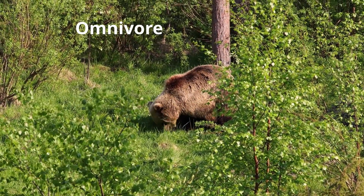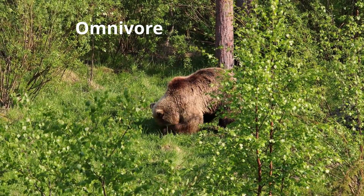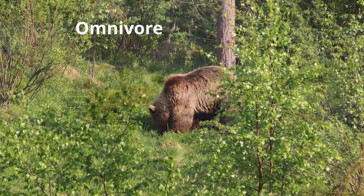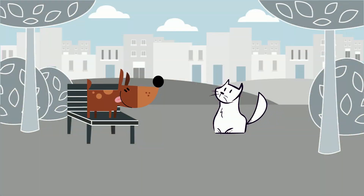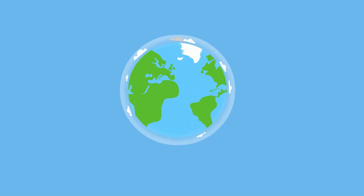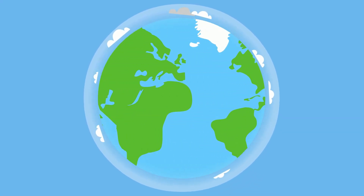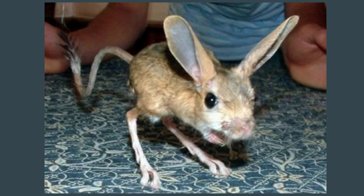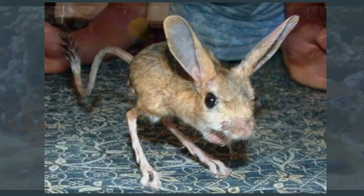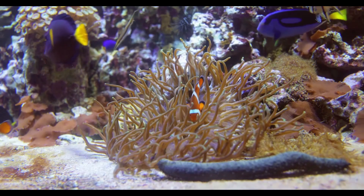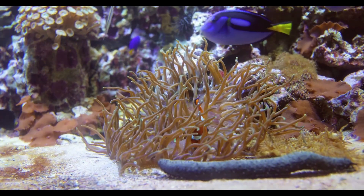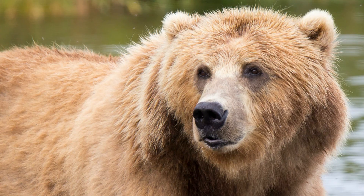An omnivore eats both plants and animals. Most humans are omnivores along with dogs and cats. Omnivores are found in all the major terrestrial and aquatic biomes. For example, in the desert you may find a small rodent called the jerboa, which likes to feed on plants and animals. The clownfish is an example of an omnivore found in the ocean, and most bears are omnivores. They will consume both plants and other animals.